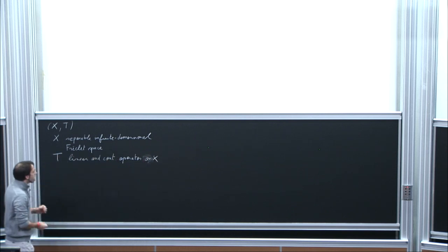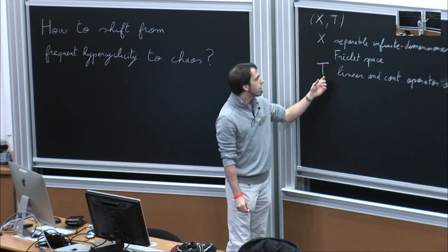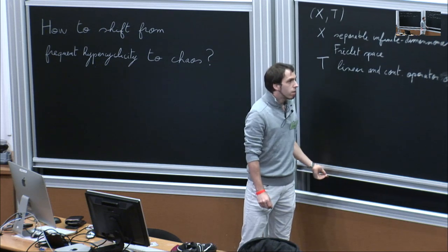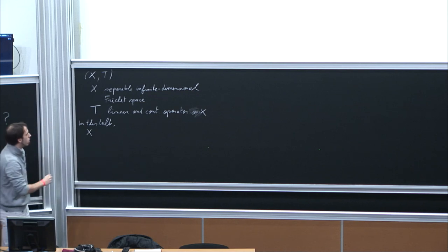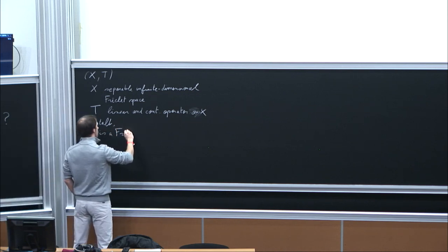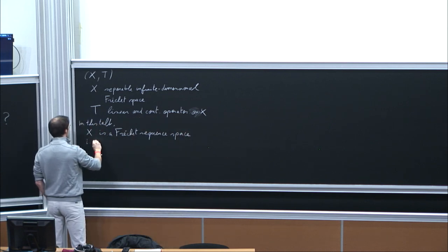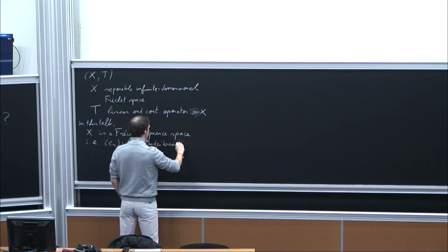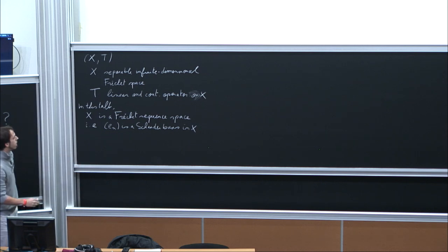When you have these two objects, because T is going from X to X, you can consider the iterates of T, and you can be interested in the properties of the orbit of T — that is, the set you get when you apply T again and again to some vector. For this talk, we will assume that X is a Fréchet sequence space, meaning that in X we have a Schauder basis, and the coordinate functionals are continuous — so the maps sending a sequence (x_n) to the element x_n for some fixed n are always continuous.